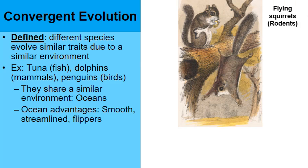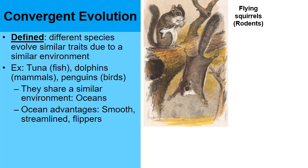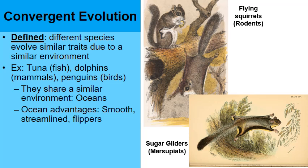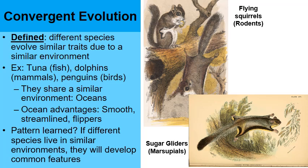Another fun example of convergent evolution: flying squirrels, which are rodents in the same category as mice and rats, and sugar gliders. When you first look at sugar gliders and flying squirrels, you would think they're very closely related — they each have little skin flaps between their front and back legs to glide through the air. But sugar gliders are marsupials, the same category as kangaroos — they're actually not closely related at all. They've converged on this appearance because it helps them survive in their environment. The takeaway: if different species live in similar environments, they tend to develop common features that allow them to survive.